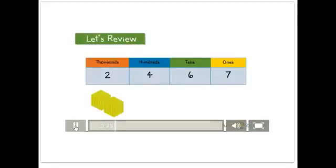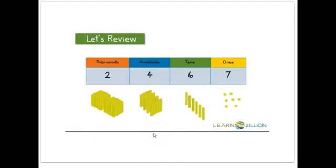We can use base 10 blocks to show numbers such as 2,467. You can see that we have 2 groups of 1,000, 4 hundreds, 6 groups of 10, and 7 ones. Even though the 2 is a smaller digit, it is worth more than the 7 because the 2 is in the thousands.